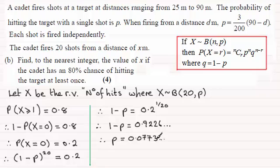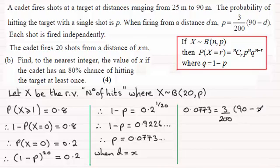So now we've got that, we can substitute this into the formula here. When d equals x, what we've got is 0.0773 for p equals 3 over 200 multiplied by 90 minus x.